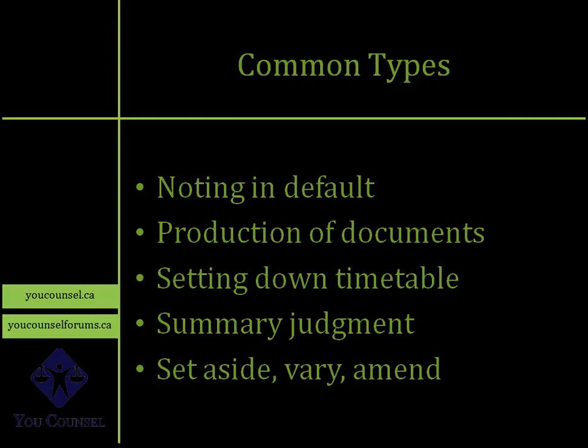Another motion is production of documents. If you realize the opposing side has certain documents relevant to the issues in your case but has failed or refused to produce them, you can bring a motion and ask the court to issue an order compelling that party to produce those documents. Production of documents motions can also apply to third parties — parties outside of the court process who possess relevant documents — and you can compel them through a court order as well.